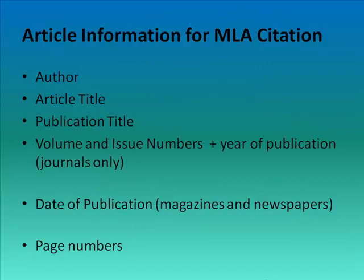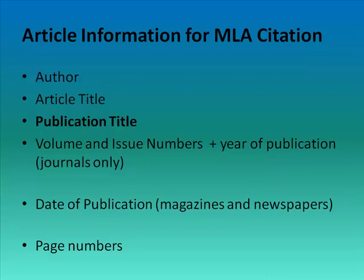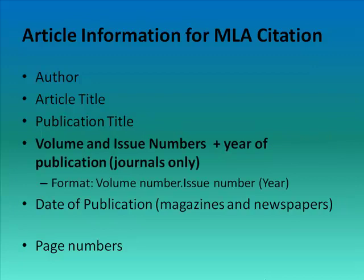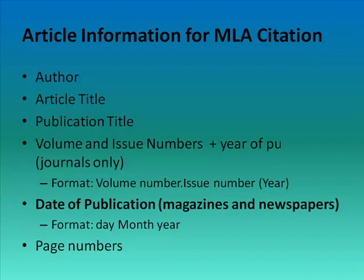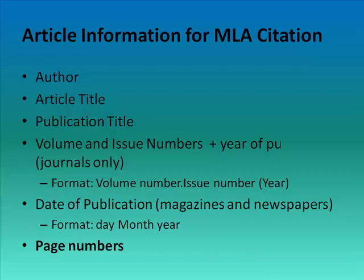The article information that will be included in the citation is as follows: the author — some articles may not have an author listed — the article title, and the title of the magazine, journal, or newspaper in which the article was published. For journals only, you will give the volume and issue numbers and the year of publication. The format is the volume number followed by a decimal point and then the issue number, with the year of publication enclosed in parentheses. For magazines and newspapers, provide the full date of publication in an inverted format with the day, the month or abbreviated month name, and the year. And finally, you'll have the article's page numbers.